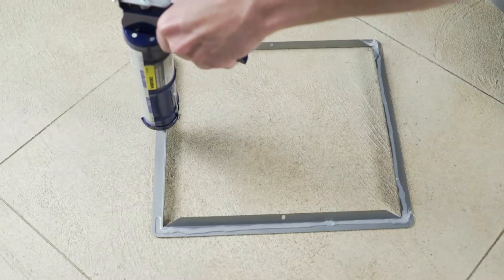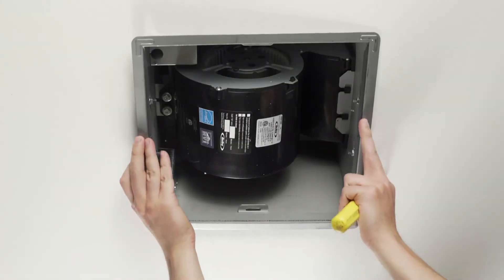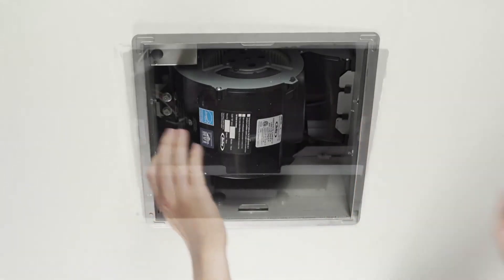Install the sealing flange by placing an approved sealant around the edge of the flange and lift into place. Seal the drywall around the unit so it is flush.